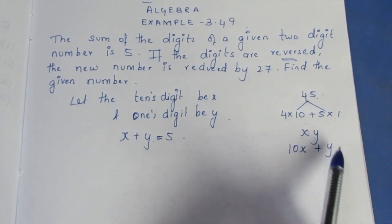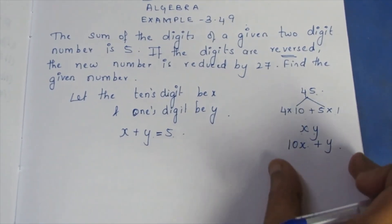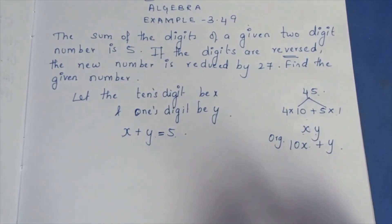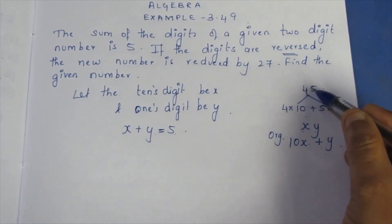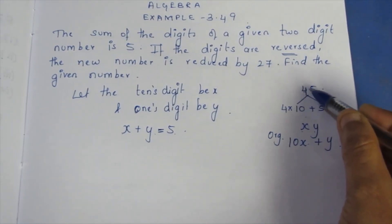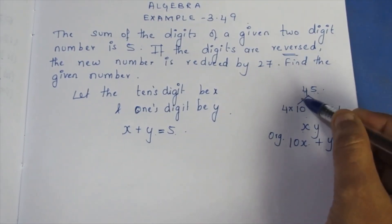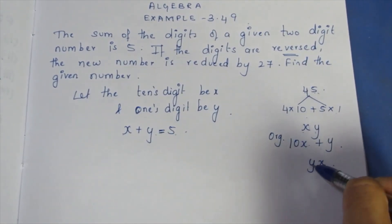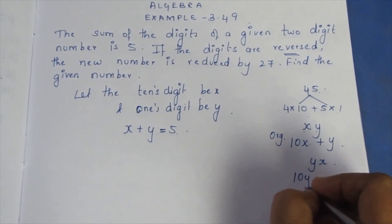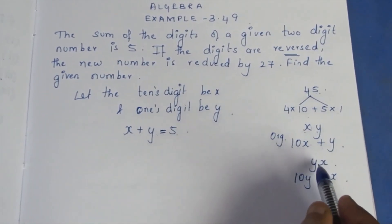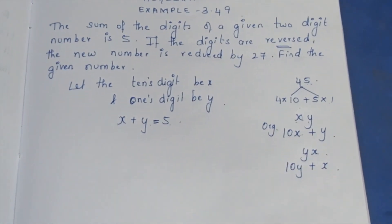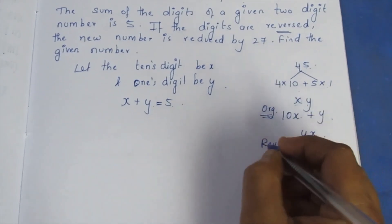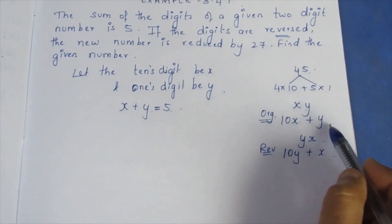So the original two-digit number is 10x + y. The reversed number is 10y + x. For example, if the digits are 4 and 5, then 4+1 = 5 confirms the digit sum. The original number is 10x + y and the reversed number is 10y + x.